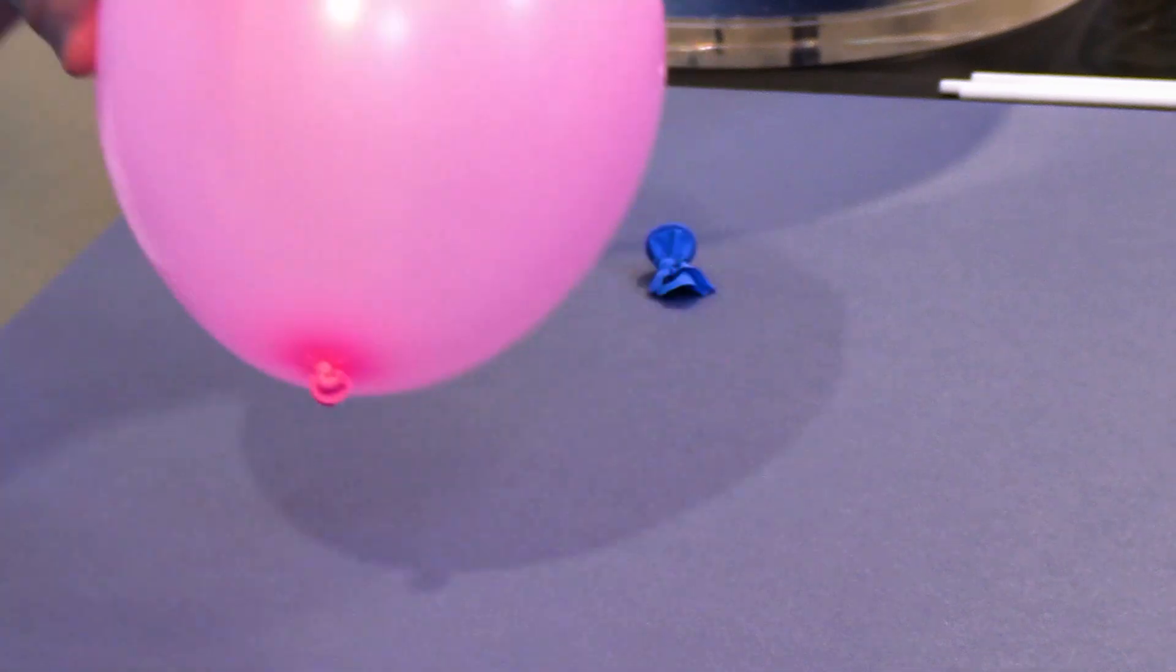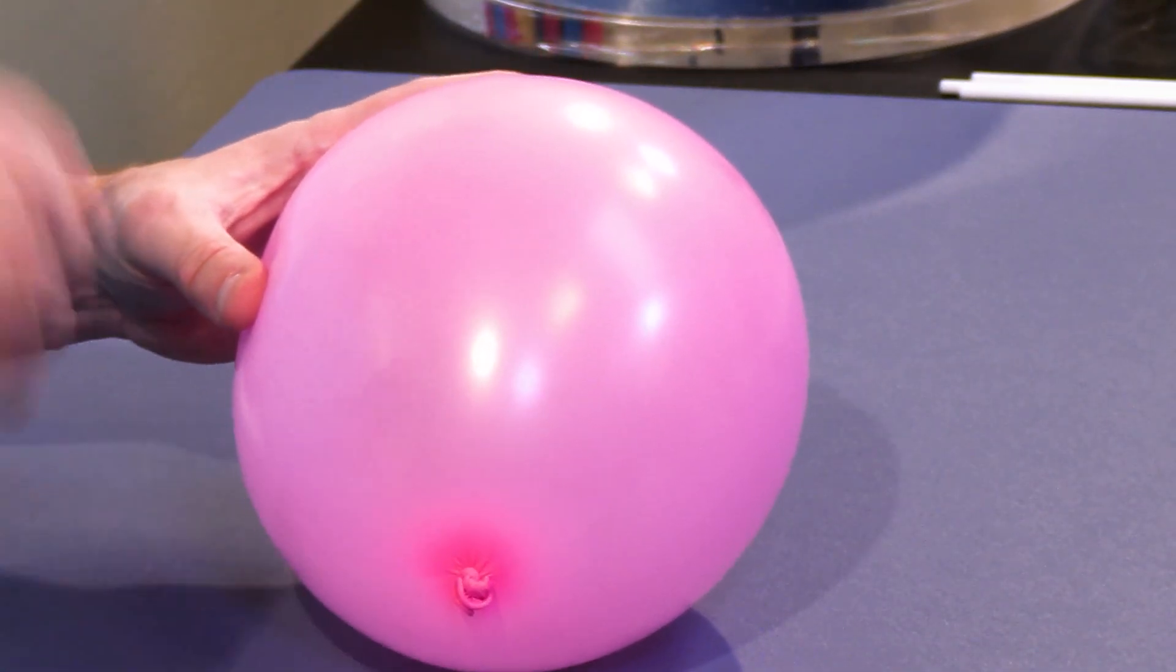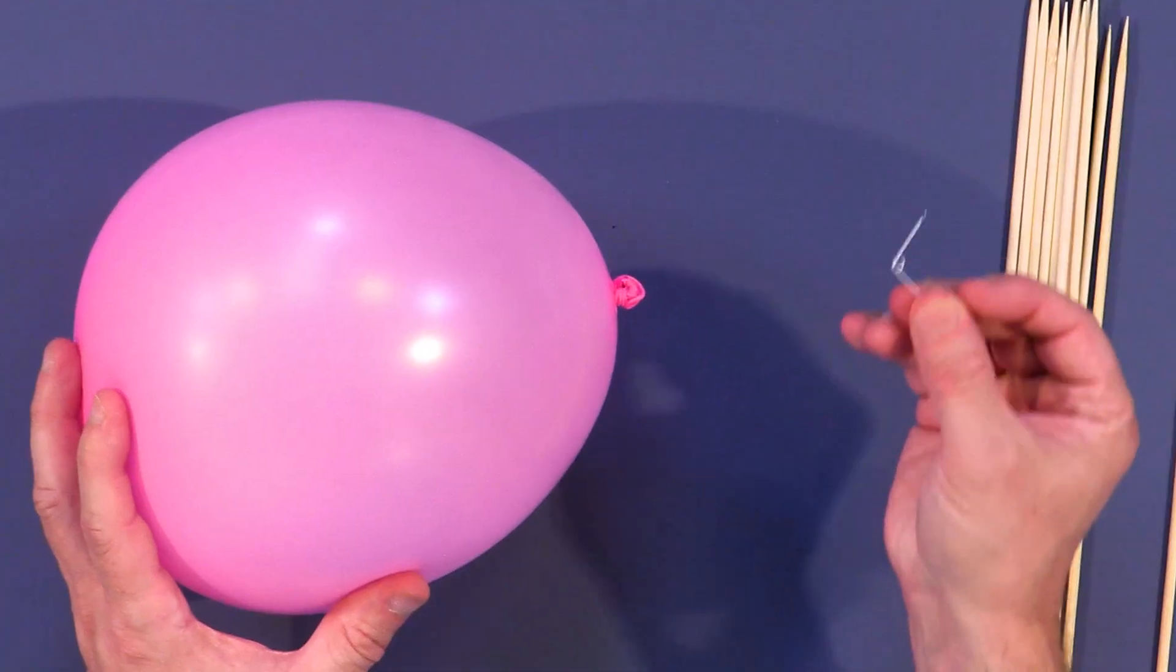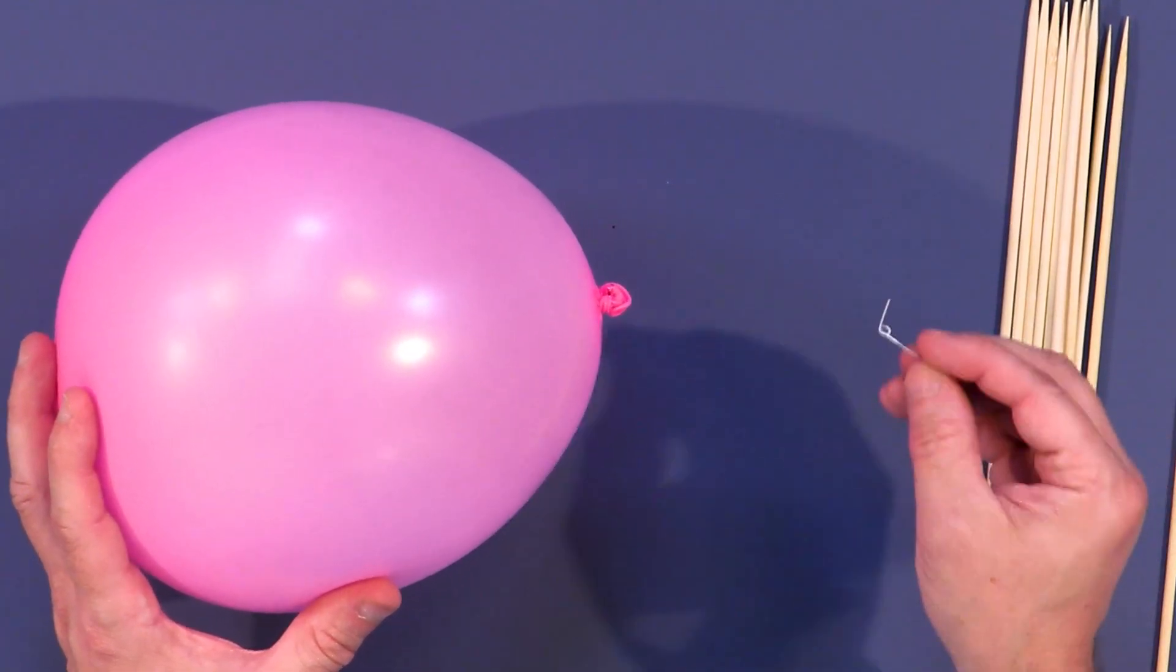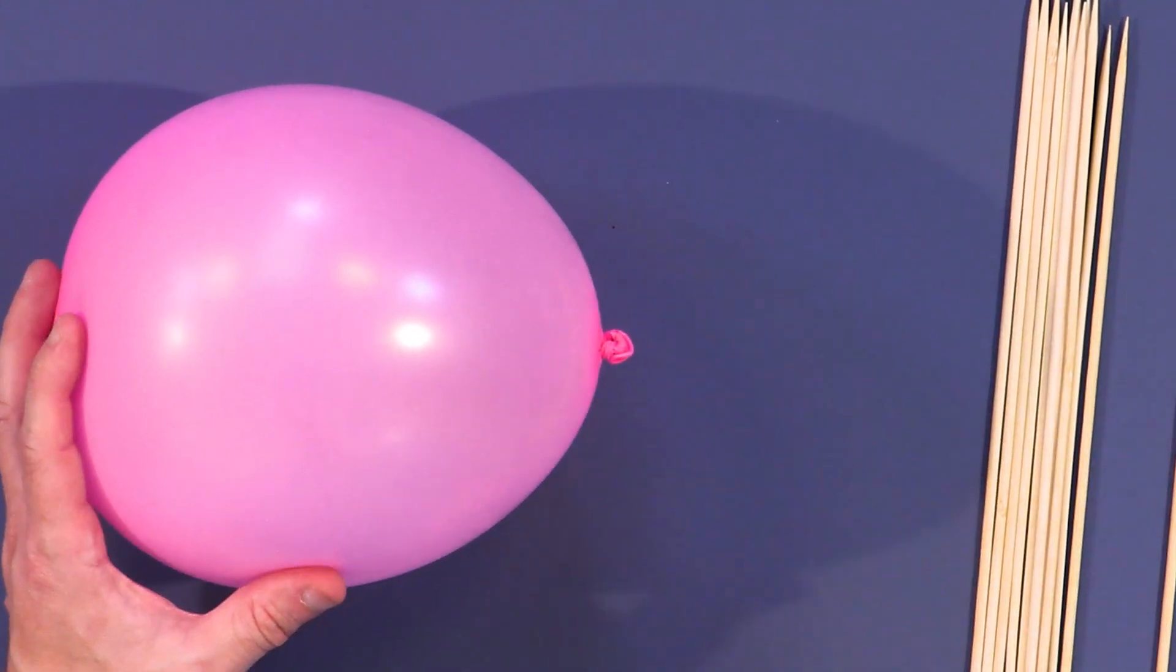So when you puncture it, it's not wanting to rip apart so much when you puncture it at the ends. So let's increase the size of our puncture device from a needle to something a little bit bigger and see if we can get it to puncture at the end with a bigger object.